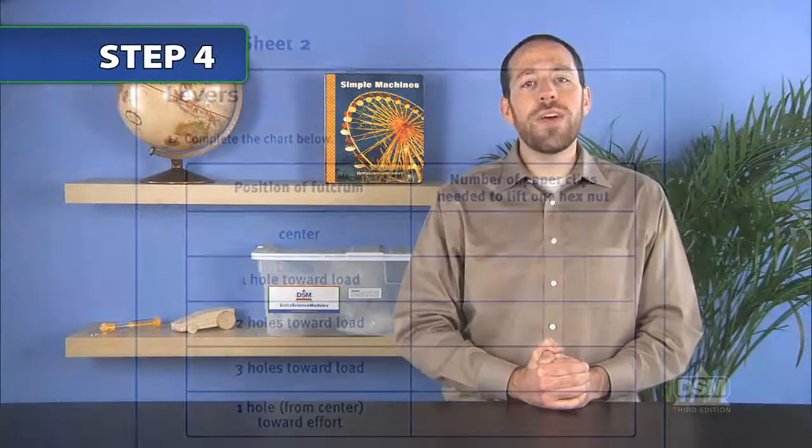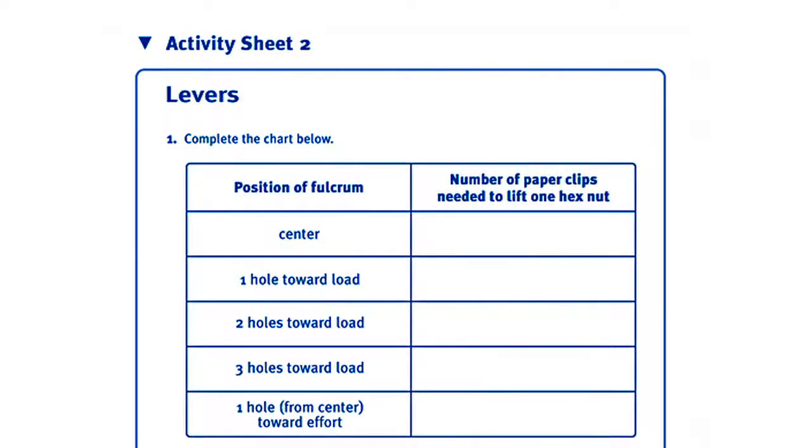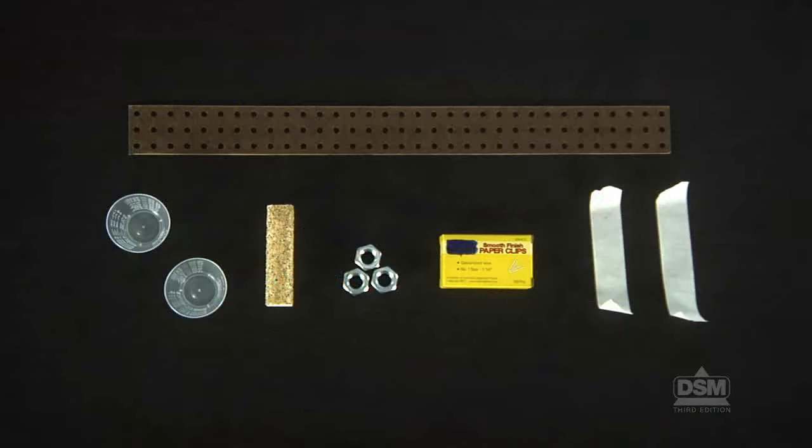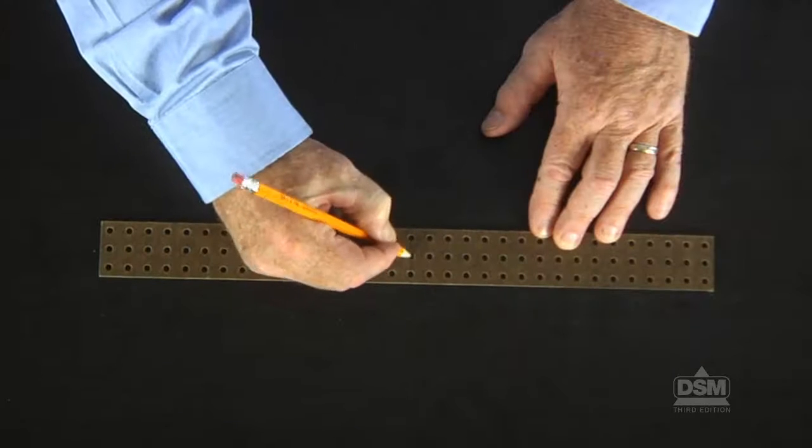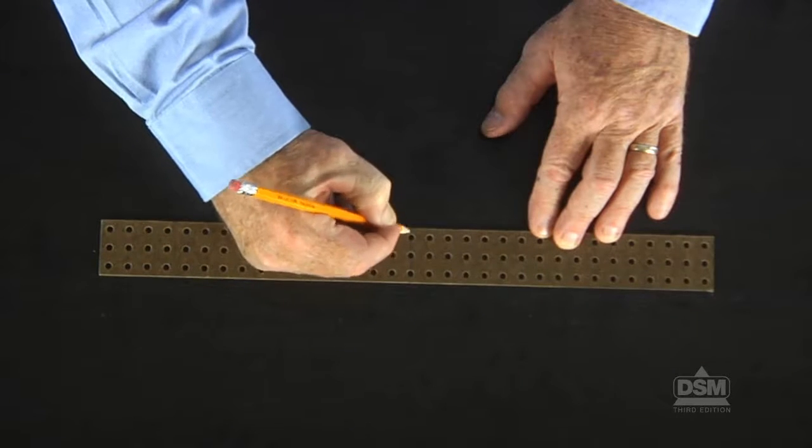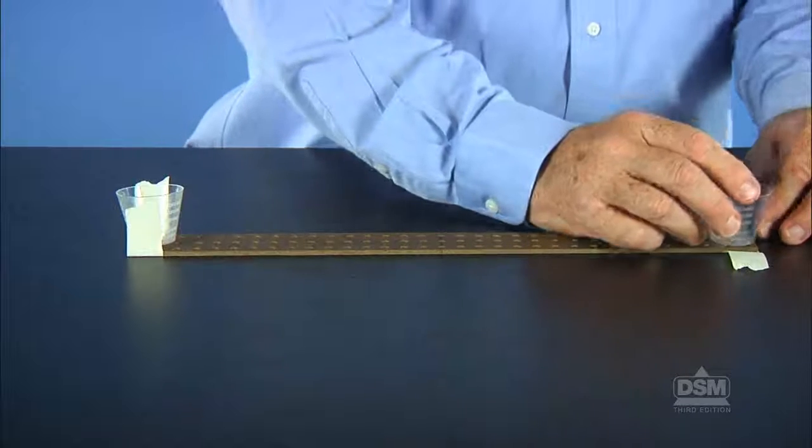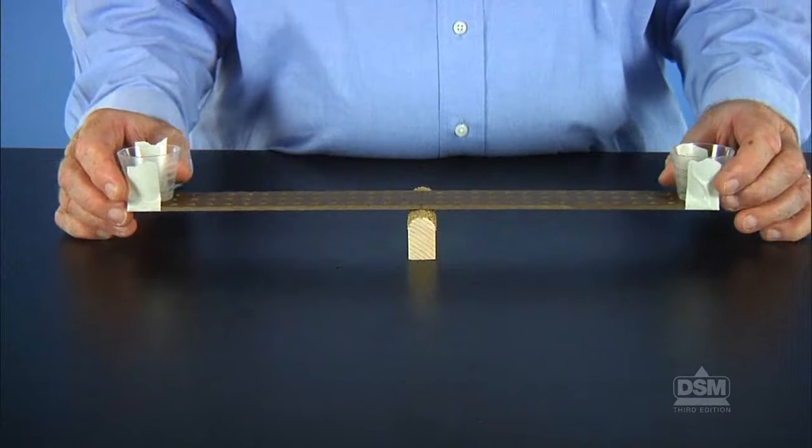Next, distribute a copy of Activity Sheet 2 to each student and the materials to each team. Instruct the teams to mark the center of their pegboard beam with a pencil and to tape a plastic cup to each end of the beam and then center the pegboard beam on top of the fulcrum. The center of the pegboard beam can be determined by counting the holes. The cups should be equidistant from the ends of the pegboard.